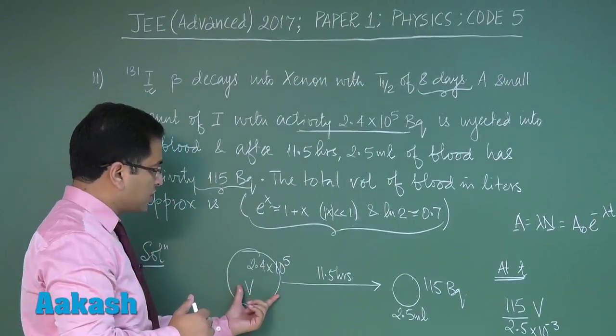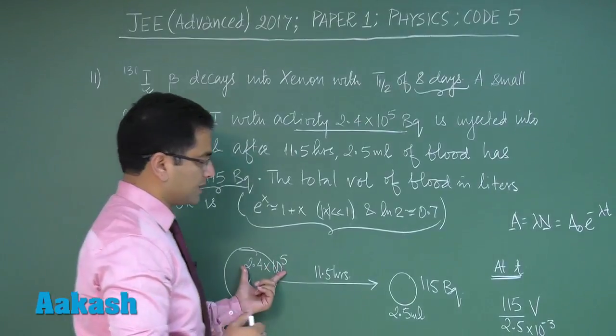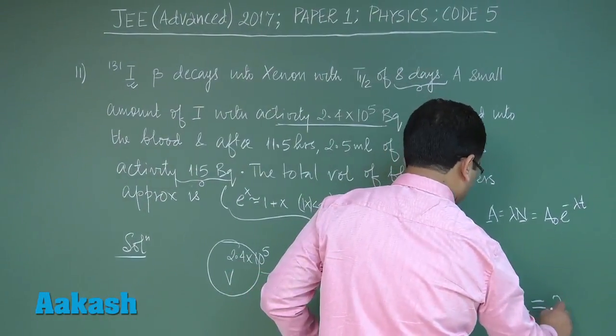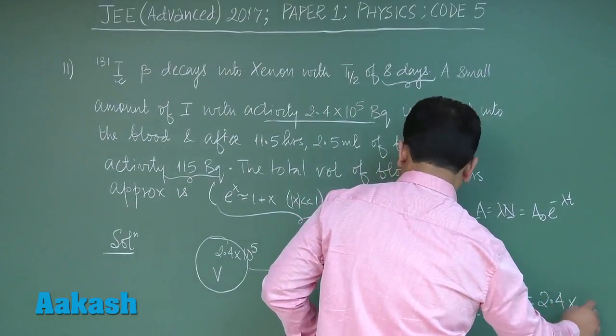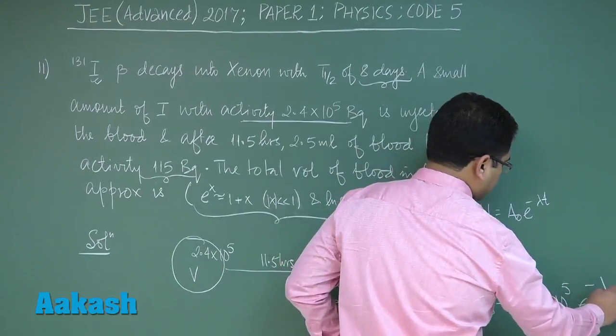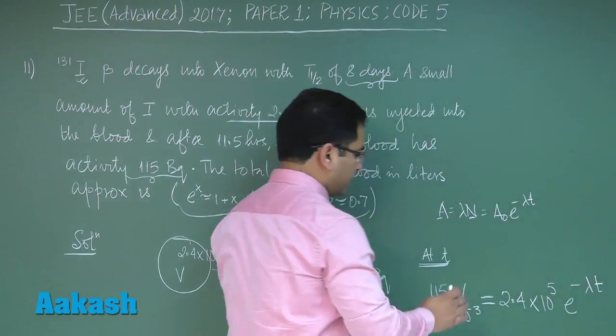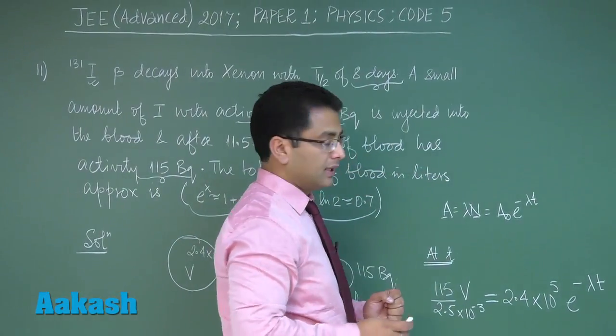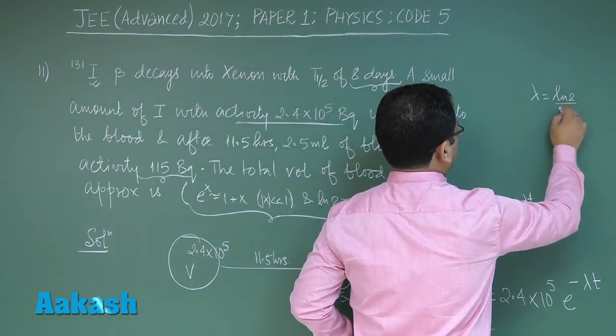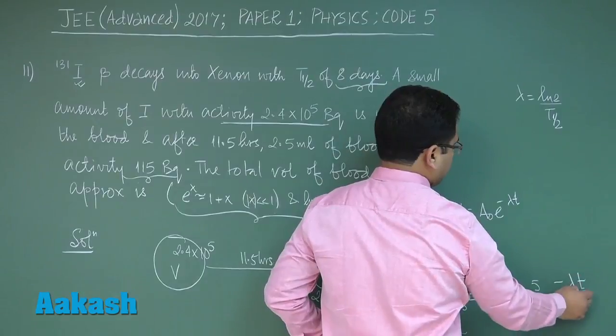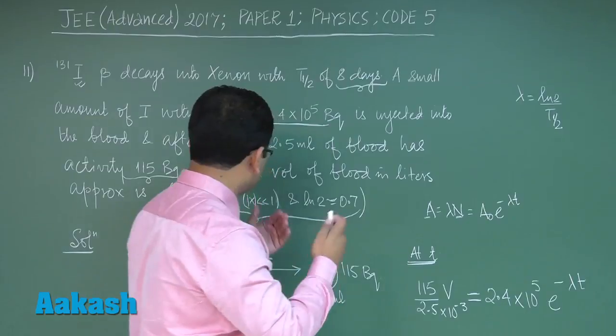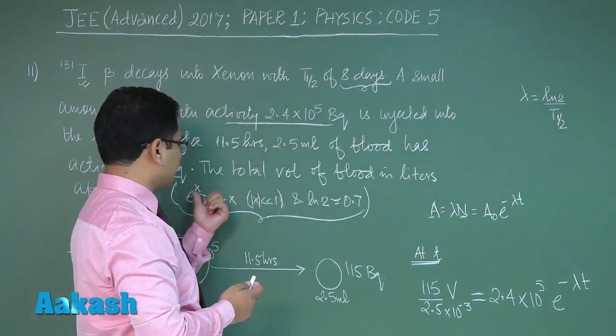The entire V volume's initial activity was this much. So this present activity would equal A₀ = 2.4 × 10^5 × e^(-λt). Now it seems a bit difficult, but lambda can be put as log 2 by t_half and t can be put the respective value. We'll get an opportunity to use e^x as 1 + x.